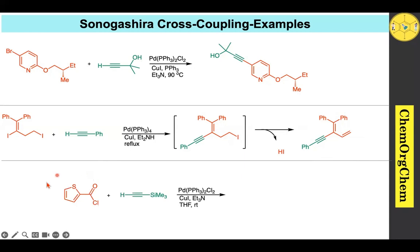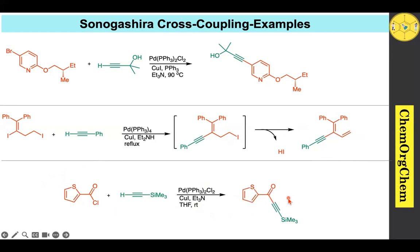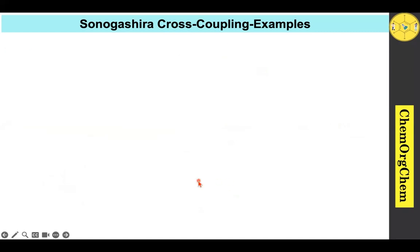Example 5: An acid chloride can be coupled with an alkyne under Sonogashira cross-coupling conditions to produce the corresponding ynone product.